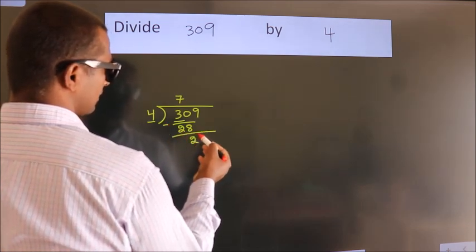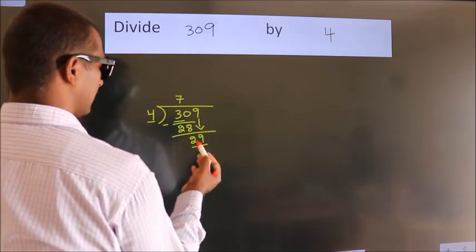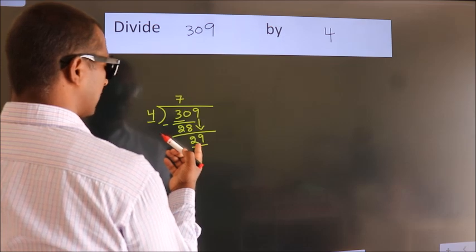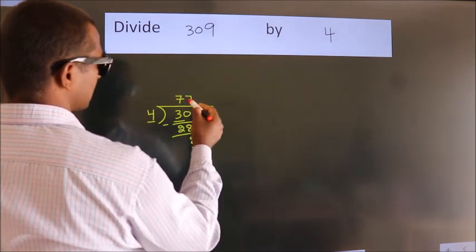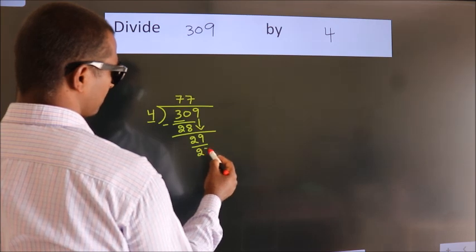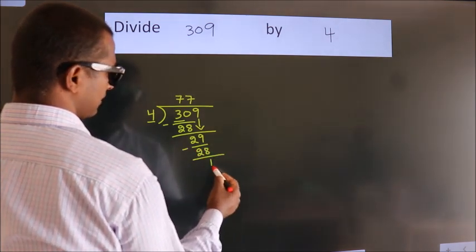After this, bring down the next number. So 9 down. So 29. A number close to 29 in the 4 table is 4 times 7 equals 28. Now we subtract. We get 1.